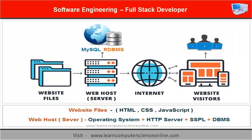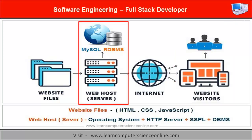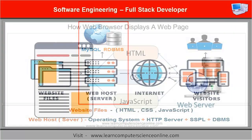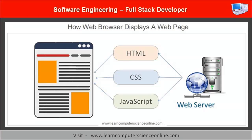In other words, a full stack developer can work on front-end technologies — that is, on the client side — as well as on back-end work, that is server-side programming. The front-end programming languages essentially include HTML (HyperText Markup Language), CSS (Cascading Style Sheets), and the JavaScript programming language, widely used for web coding.